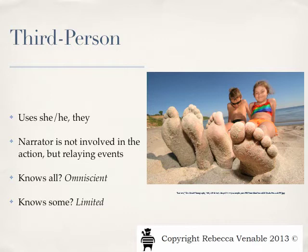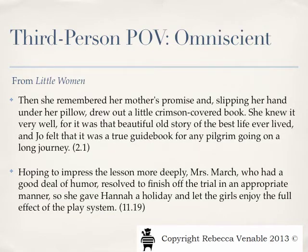That presents two options: we can have two types of third-person narrator — omniscient or limited. An omniscient narrator knows every single thing going on and can hear all characters' thoughts, whereas a limited narrator can only hear one character's thoughts or none at all. In Little Women, we get to hear everyone's thoughts: 'She knew it very well, for it was that beautiful old story of the best life ever lived, and Jo felt that it was a true guidebook.' We have her opinions, thoughts, and connections. Later, Mrs. March's thoughts are also shown: 'Hoping to impress the lesson more deeply, Mrs. March, who had a good deal of humor, resolved to finish off the trial in an appropriate manner.' So we have two different people's thoughts, actions, and reactions through an omniscient narrator.